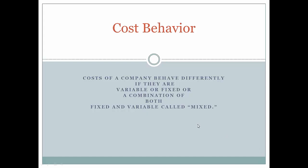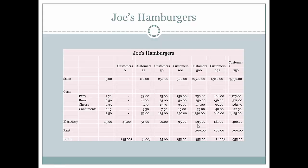Let's look at an example so you'll understand better. Let's look at Joe's hamburgers. Joe has sales — this is how much he sells his hamburgers for. He sells them for $5. A cost associated with selling the hamburgers is he's got a hamburger patty, buns, cheese, and condiments, all of which total to $2.50.